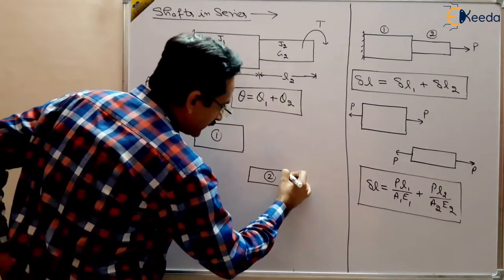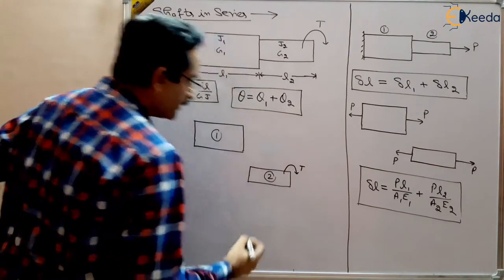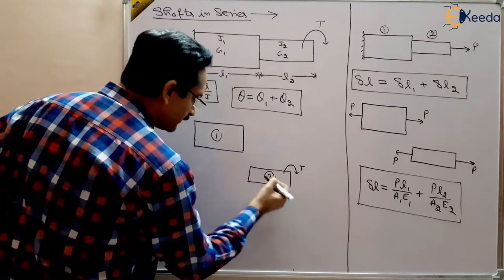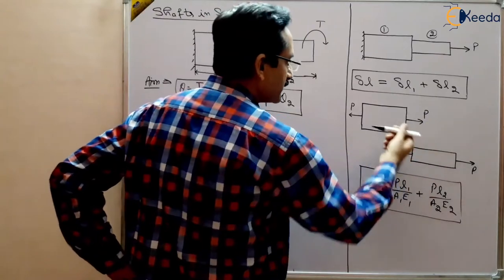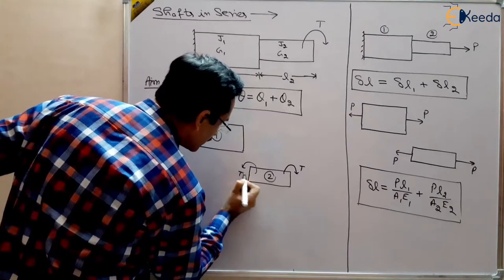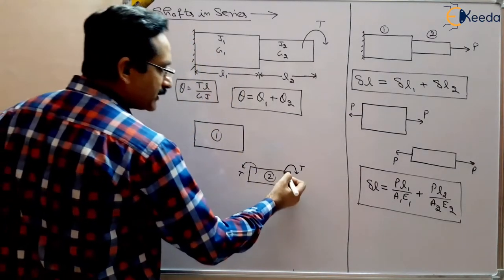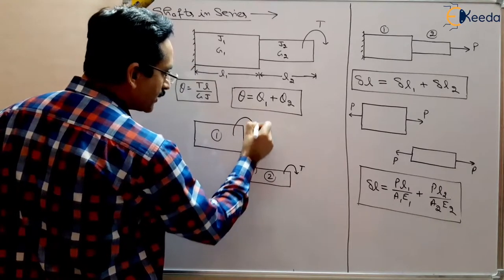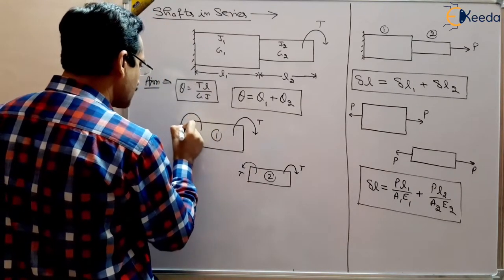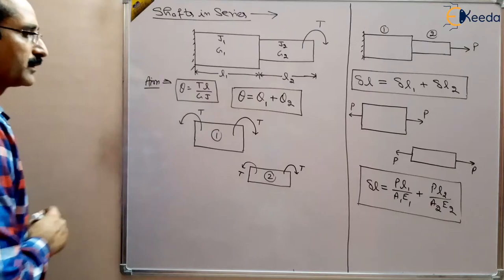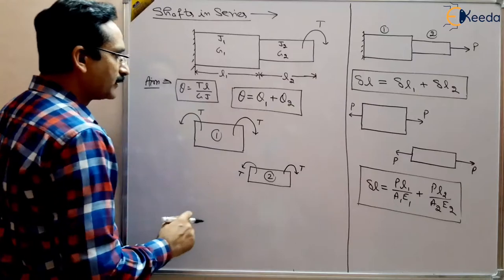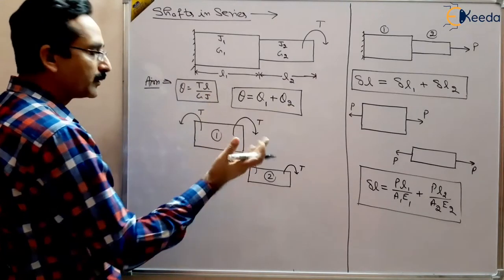We have applied a torque T here — it is a clockwise torque when viewed from this side. At the other end it will be anticlockwise, because the body is in static equilibrium — if it is clockwise here, there must be an anticlockwise torque at the other end. So these are the torques on this part. The torque is the same in both parts; L, G, and J may be different.